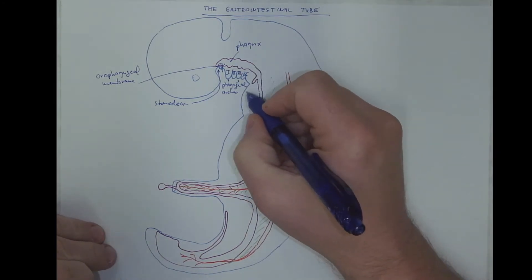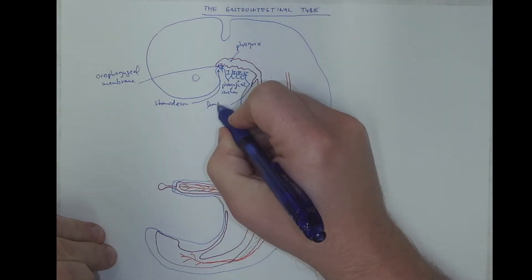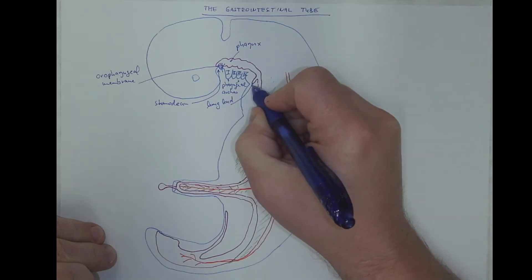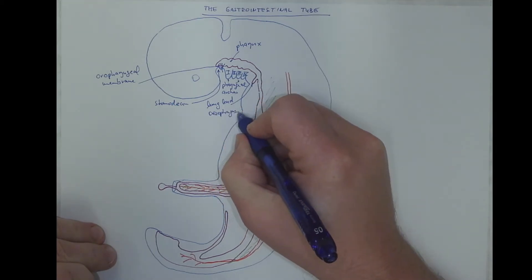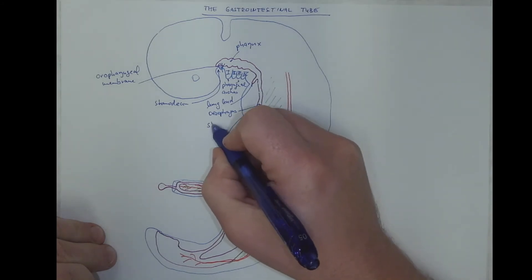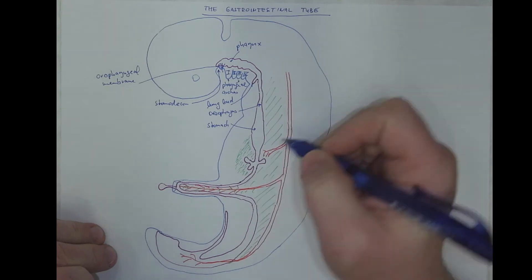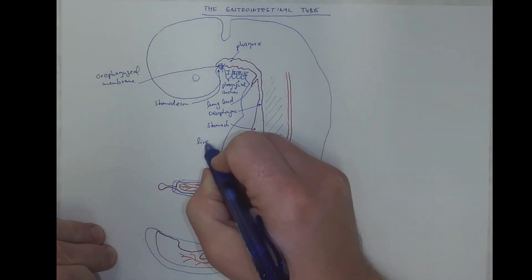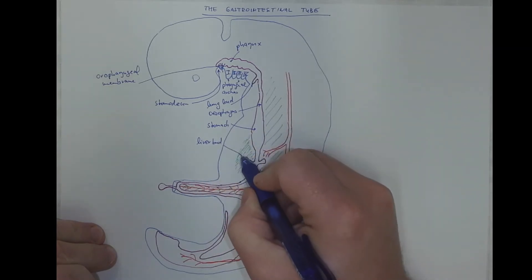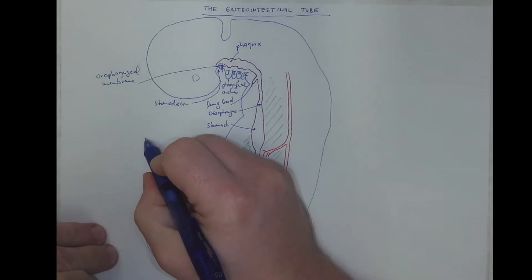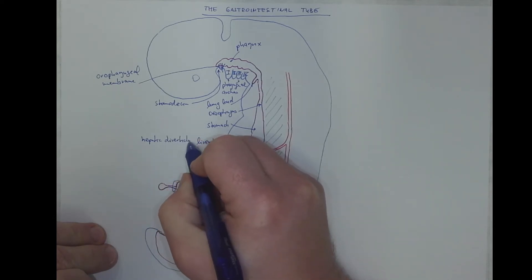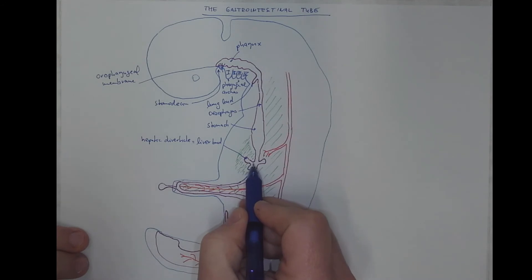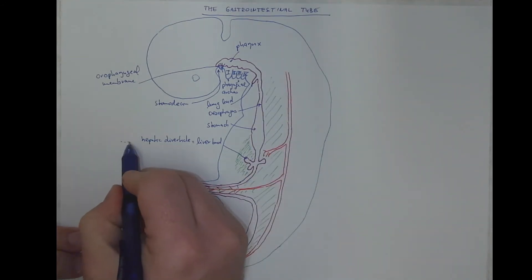Then it's the lung bud, primordium of the trachea and lungs, the esophagus, the stomach, and the liver bud, also known as the hepatic diverticle. Actually, it forms the border between the foregut and the midgut. So what is cranially from the liver bud, it's the foregut,